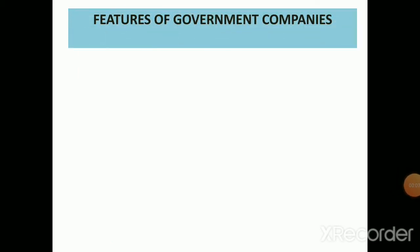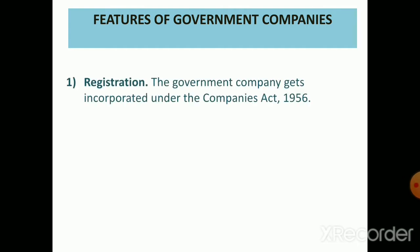The first feature of government companies is registration. A government company gets incorporated under the Companies Act 1956, which means all the provisions of the Companies Act are applicable to it. The government can get exemption from these provisions only by passing a special resolution.